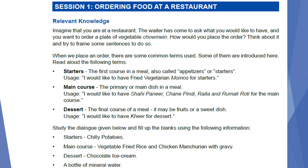Definitely each one of you must be having a different way of placing the order. But here, what is mainly taught is that when you place an order, there are some common terms used: starters, main course, and desserts. The first course in a meal is called starters or appetizers. So if you want to order a plate of vegetarian momos, you will say: I would like to have fried vegetarian momos for starters. Or you can say: for starters, I would like to have a cup of vegetable soup.